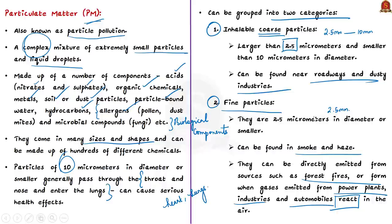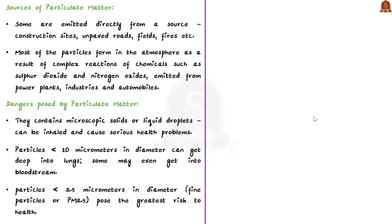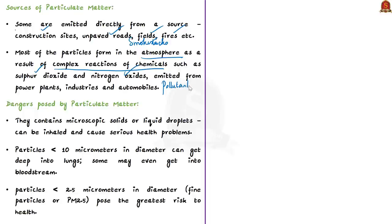Sources of particulate matter include construction sites, unpaved roads, fields, smokestacks and fires. But most particles form in the atmosphere as a result of complex reactions of chemicals such as sulfur dioxide and nitrogen oxides, which are pollutants emitted from power plants, industries and automobiles.